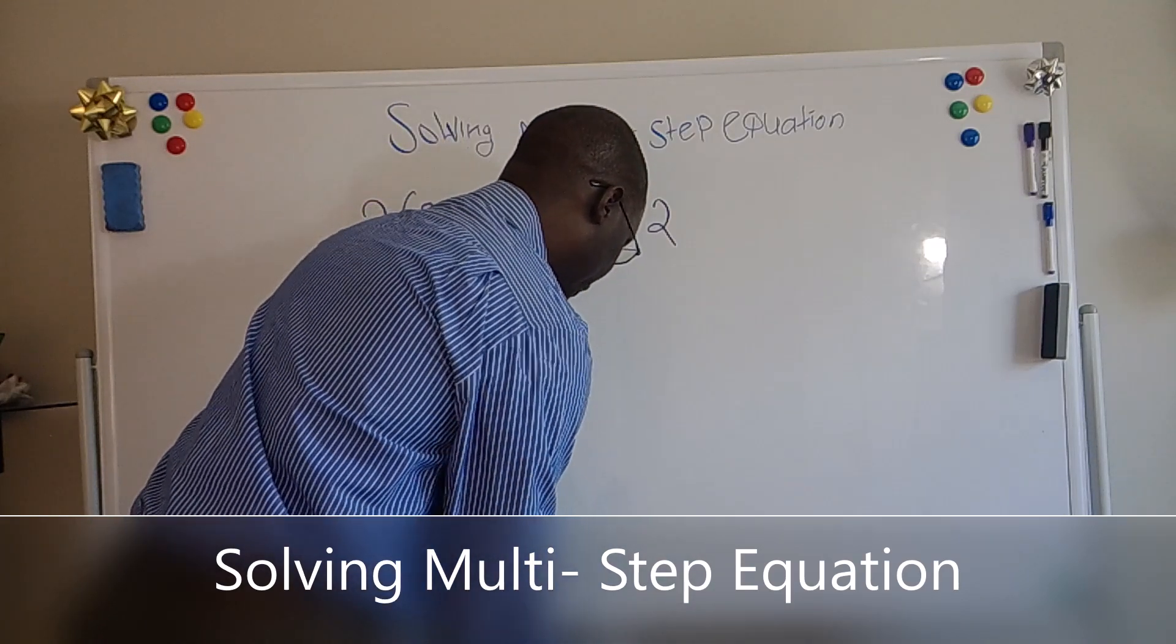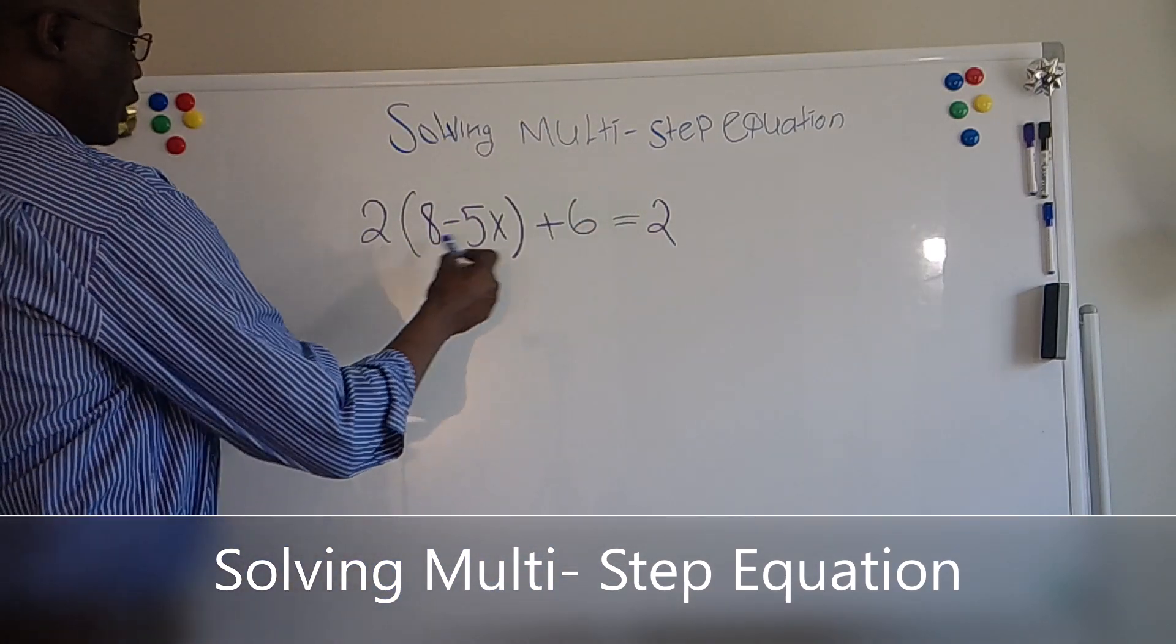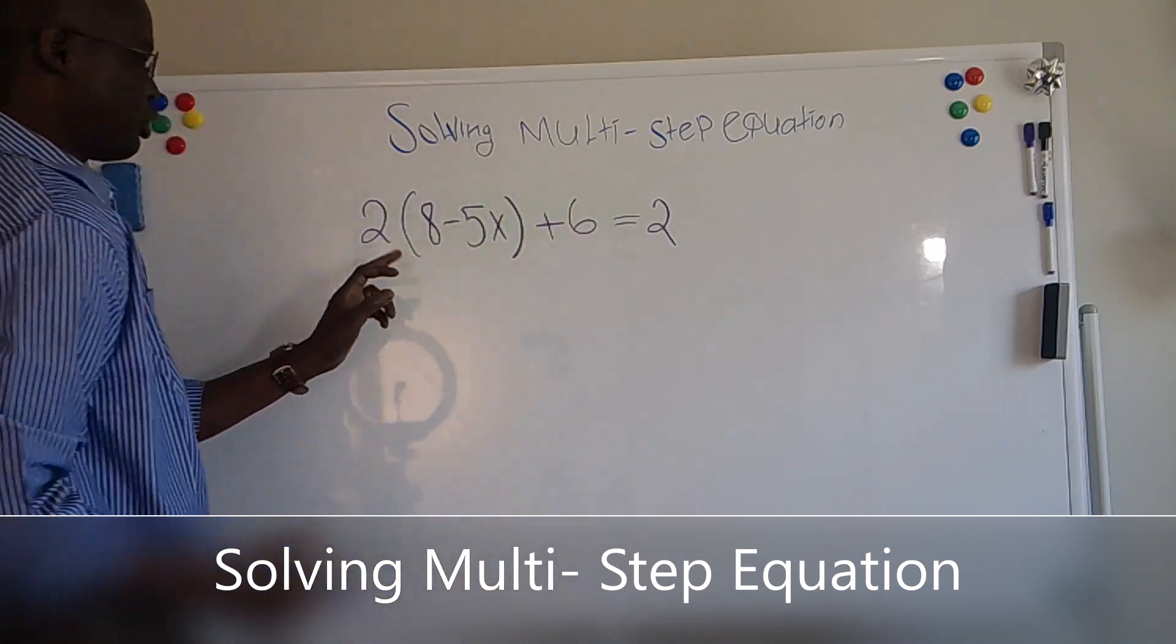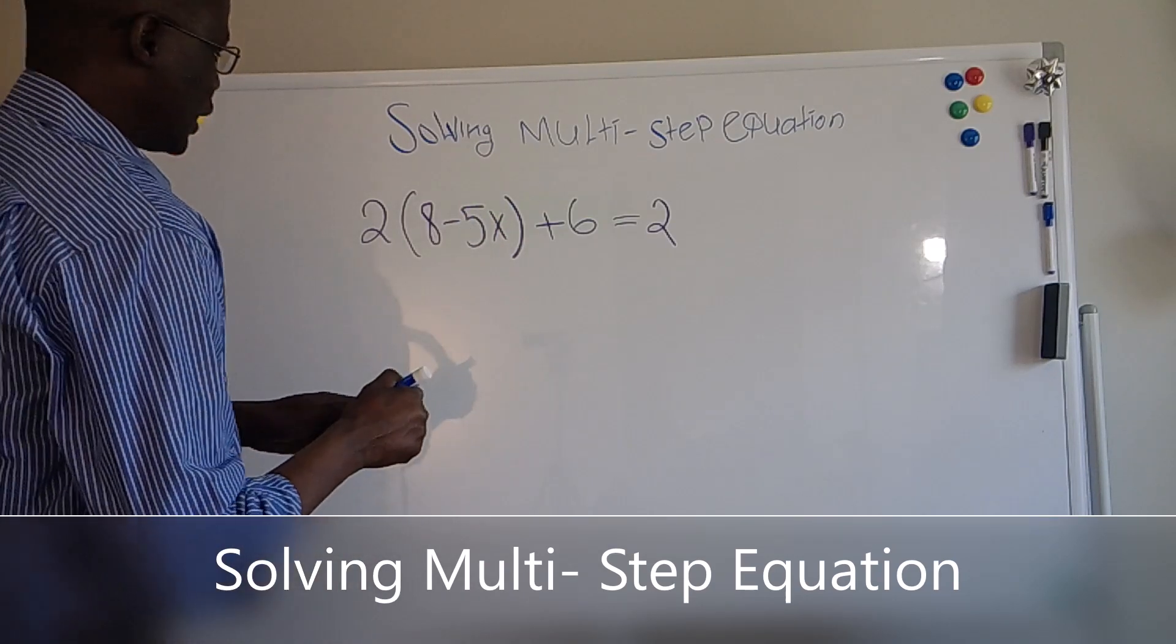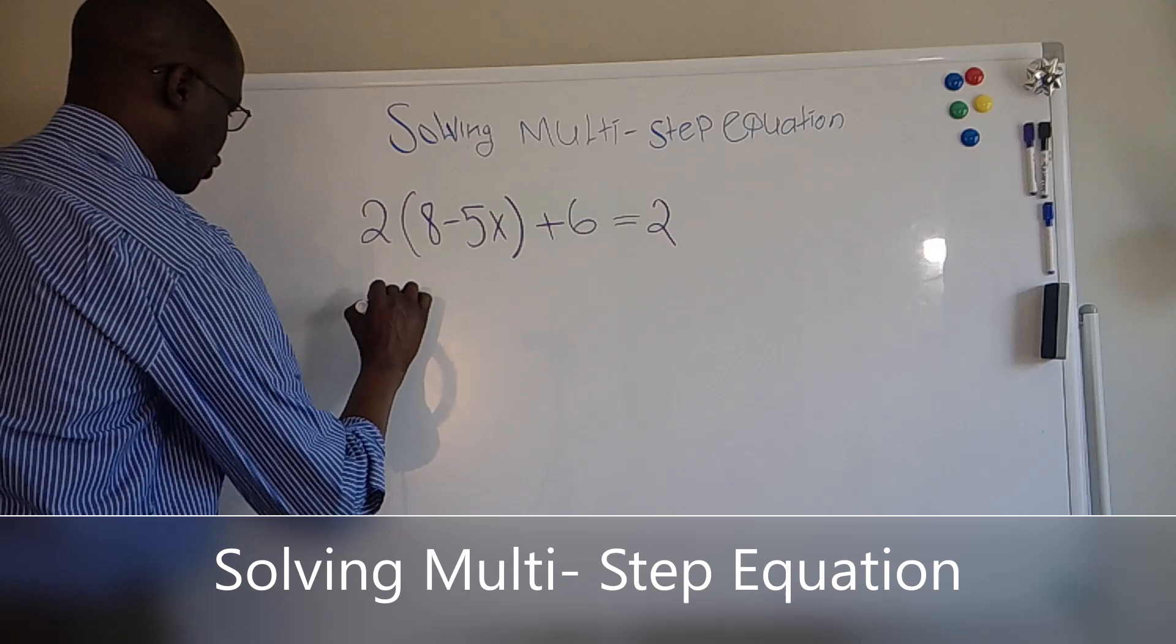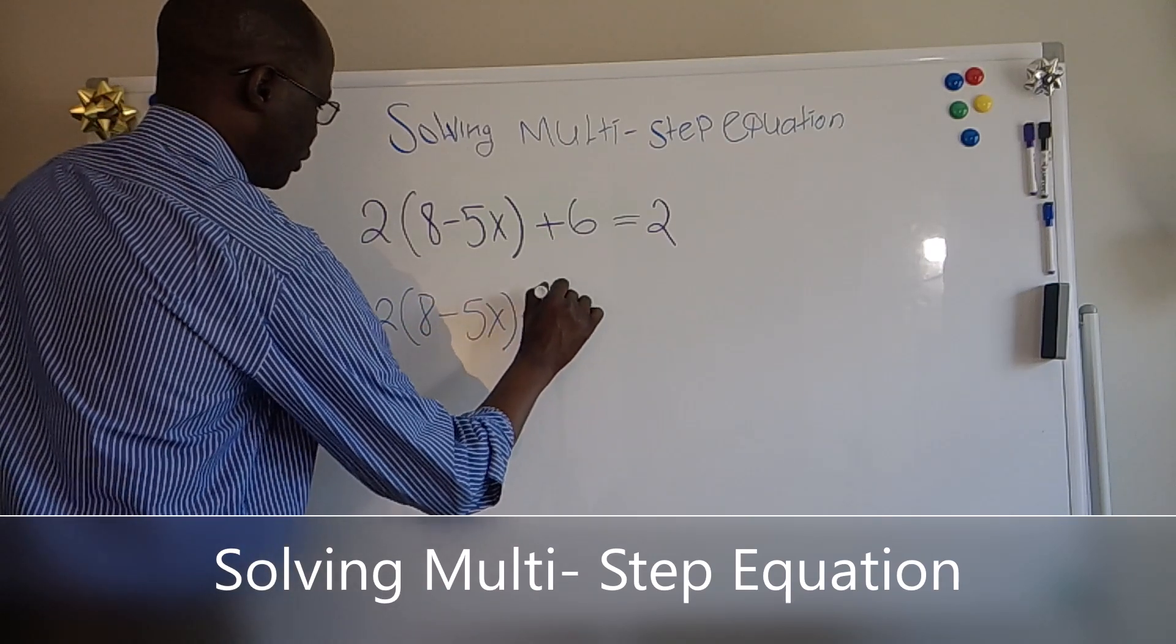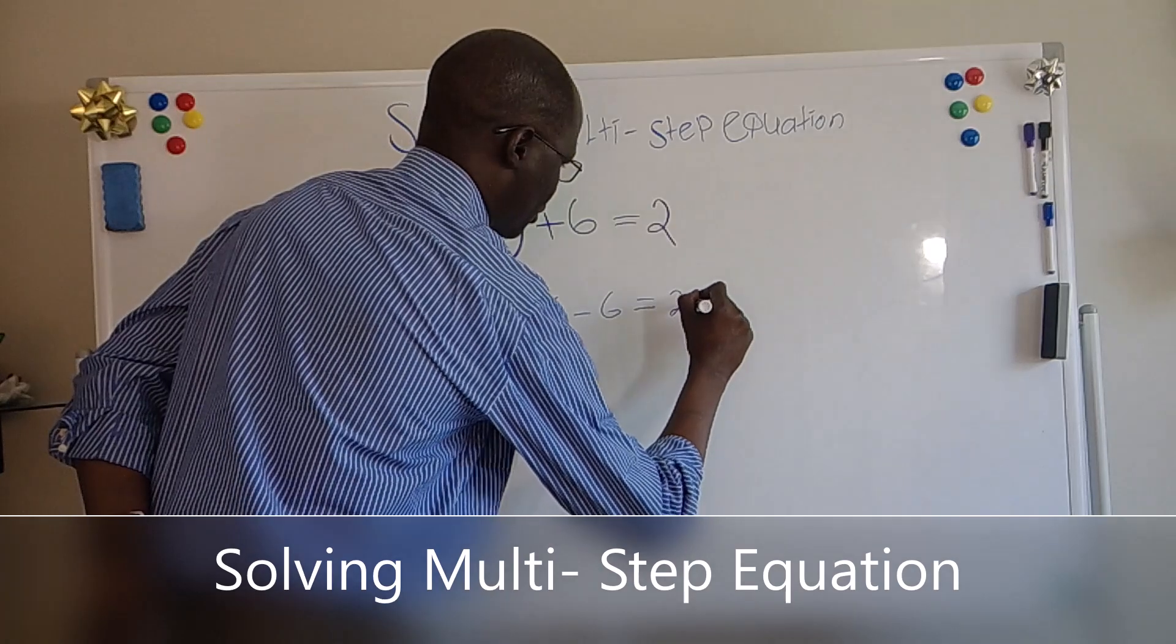The first thing we want to do here is subtract 6 from both sides of the equation. And why? Because we're trying to get rid of this 6 and 2 before even we can find the value of X. To do so, we have 2 times 8 minus 5X plus 6 minus 6 equals 2 minus 6.